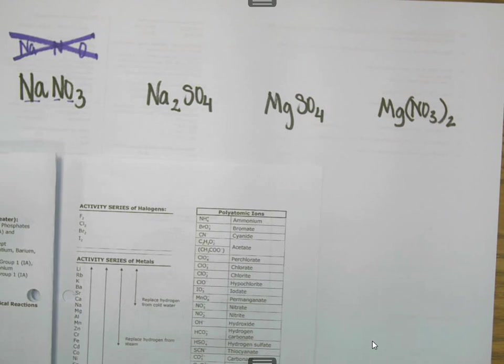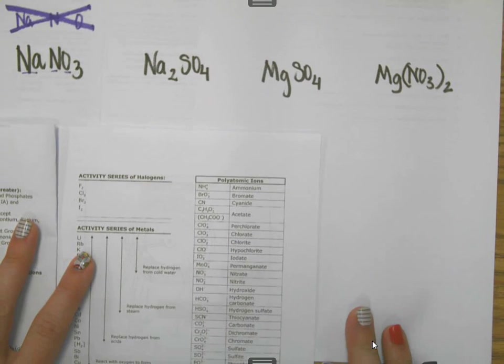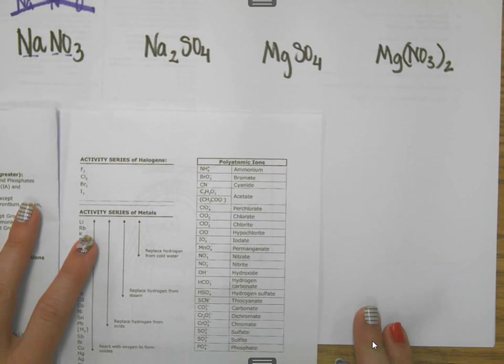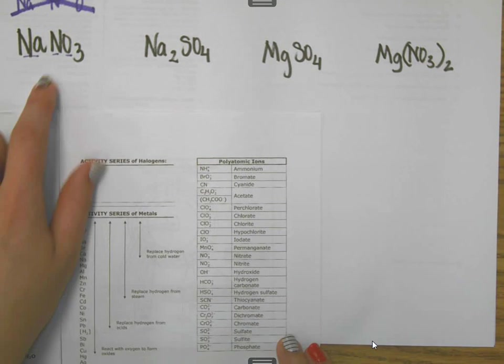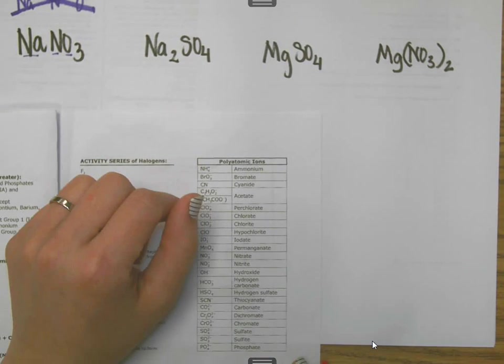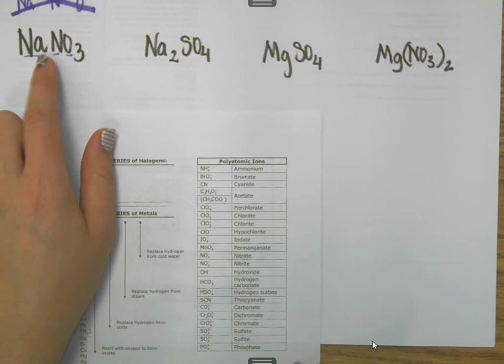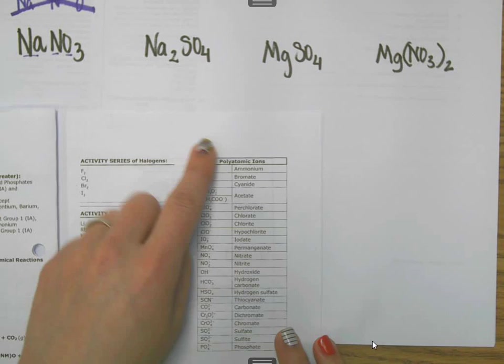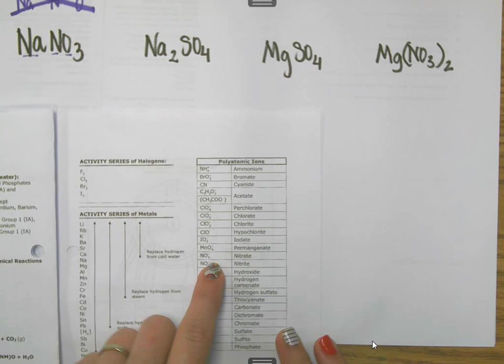So if you have it memorized, that's great. But if you don't, then you use the polyatomic table. So again, most polyatomics are negative, which means that the NO3 is your most likely combo if you don't know. So you start looking down through this table, you'll find it right there. So right there is one of my ions.